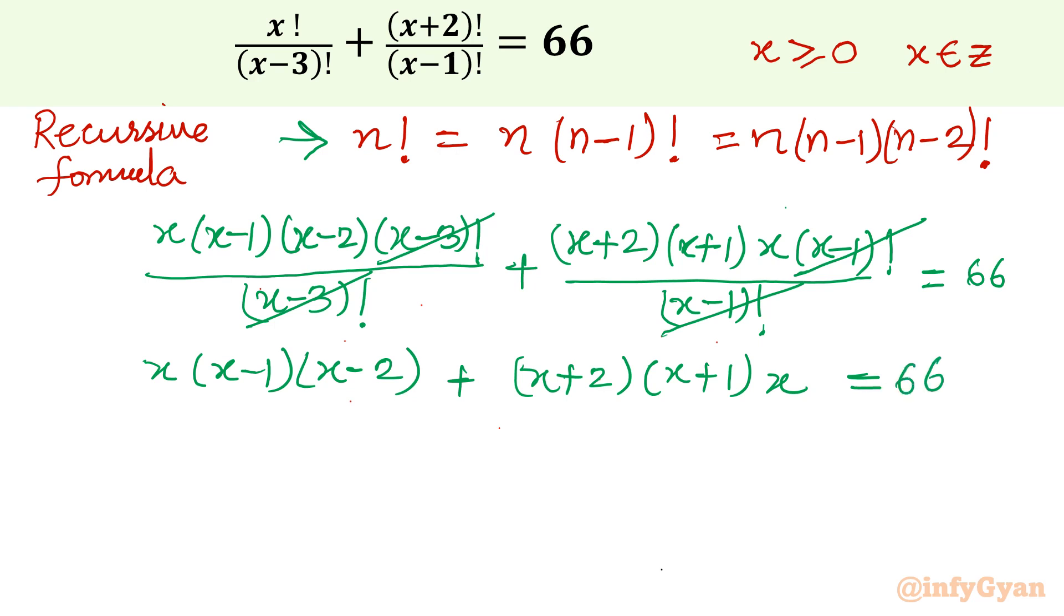Now we have x common, so I can take x out. Inside the bracket we will have x minus 1 times x minus 2 plus x plus 2 times x plus 1 equal to 66.